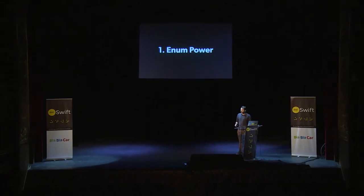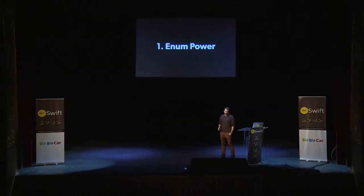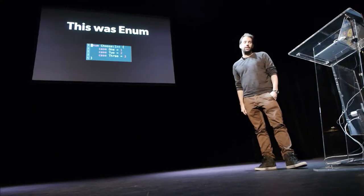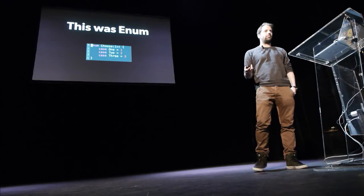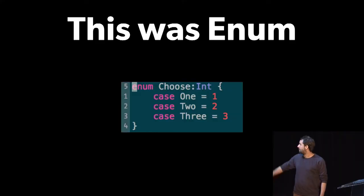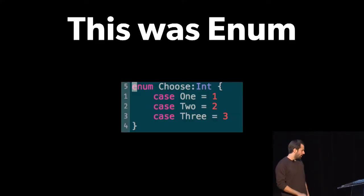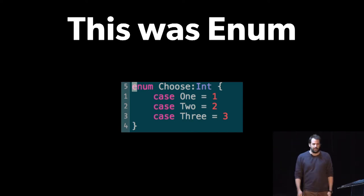The first tip is Enum Power. As told to you by Dimitri earlier, Swift has many powers, and Enum is one of them. This was Enum, like a simple enumeration list. The new Enum is more than that.